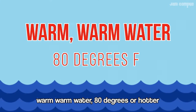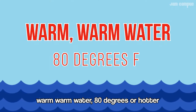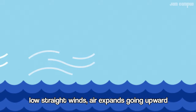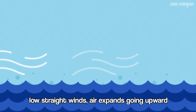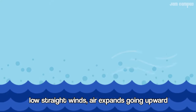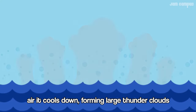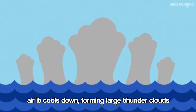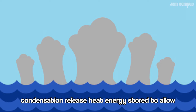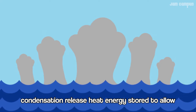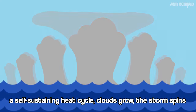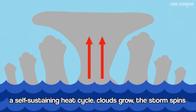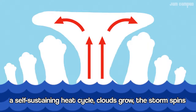Warm, warm water — 80 degrees or ahead. Low, straight winds. Air expands going upward; air cools down, forms clouds. Condensation releases heat, energy stored to allow a self-sustaining heat cycle.